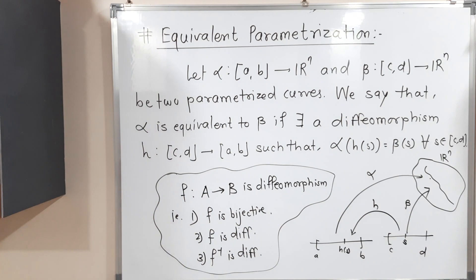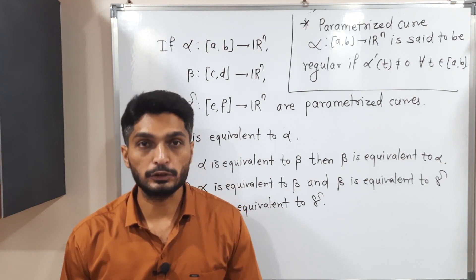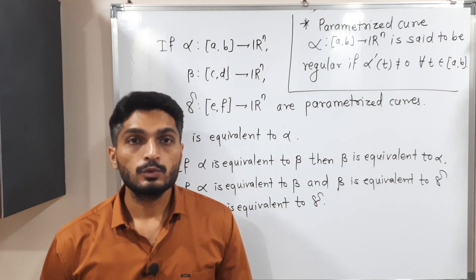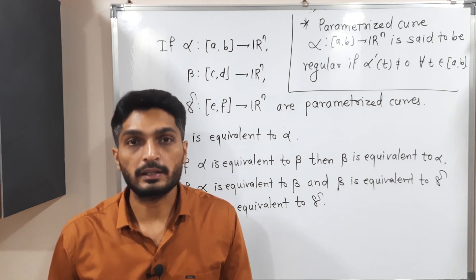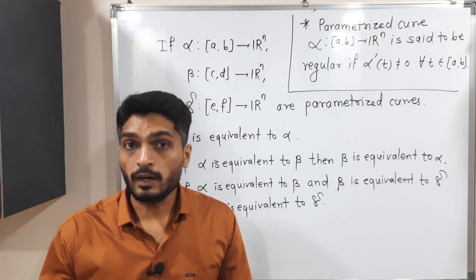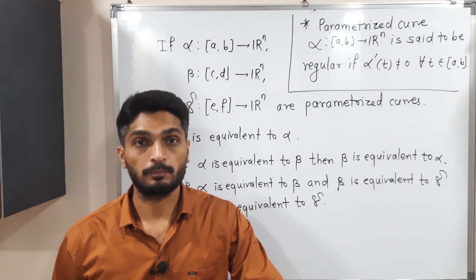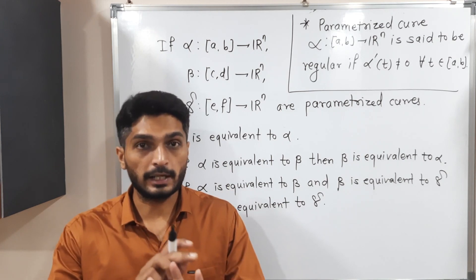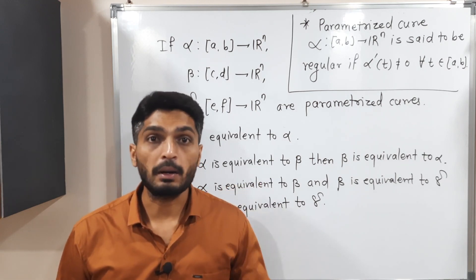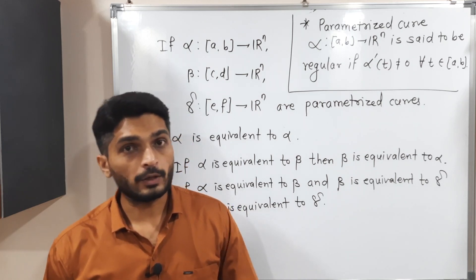Let us discuss a few important remarks about equivalent parameterization. Suppose we have three parameterizations alpha, beta, and gamma. First: every parameterization is equivalent to itself. Second: if alpha is equivalent to beta, then beta is also equivalent to alpha. Third: if alpha is equivalent to beta, and beta is equivalent to gamma, then alpha is equivalent to gamma.